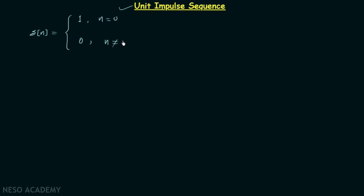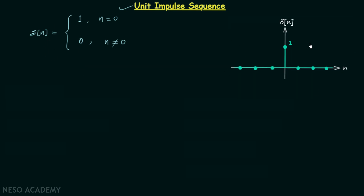This means delta[n] equals 0 when n is not equal to 0. When you plot this definition, you will have the sequence where delta[n] equals 1 when n equals 0, and delta[n] equals 0 for all other values of n.